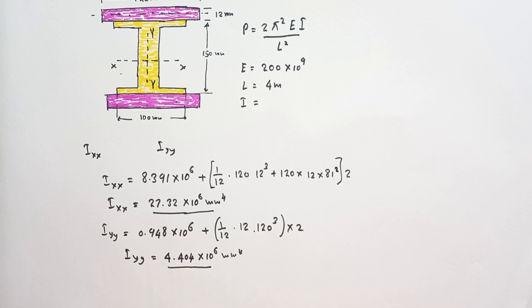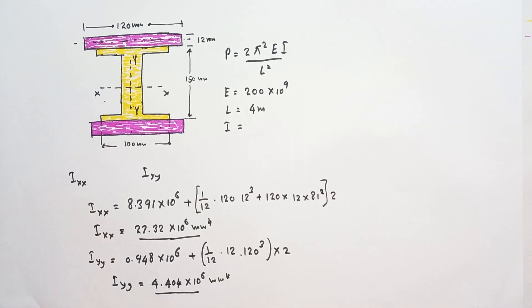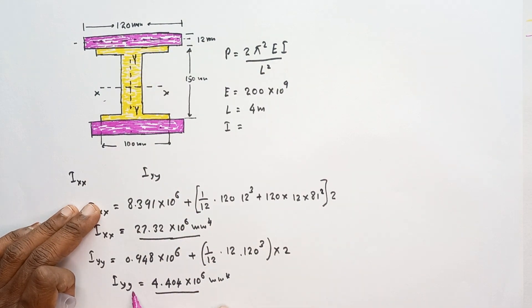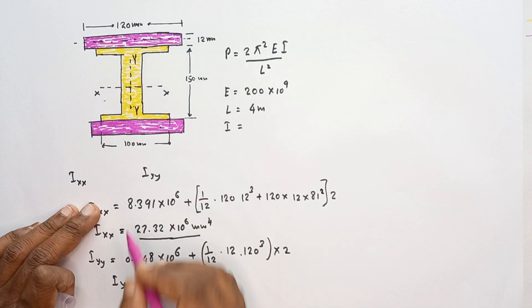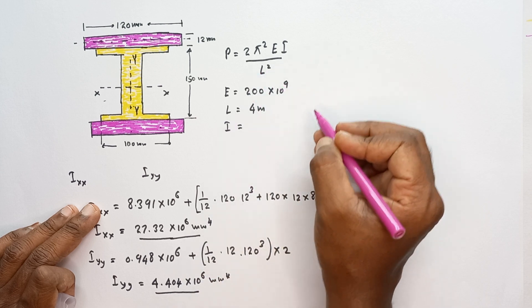Okay, this is the minimum I value, Iyy. When increasing the load, it will buckle around the yy axis because I value minimizes around the Iyy. It will maximize perpendicular to that axis, that value is equal to 27.32 × 10⁶ millimeter to the fourth. So then we have to substitute this I value in the buckling load equation.